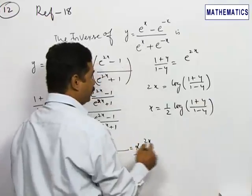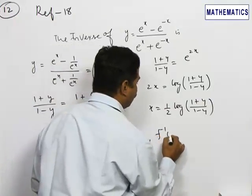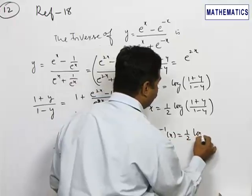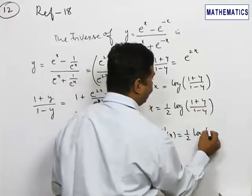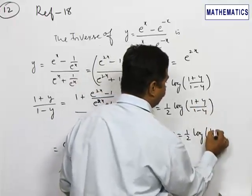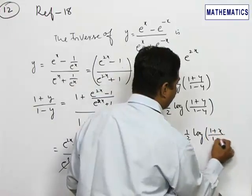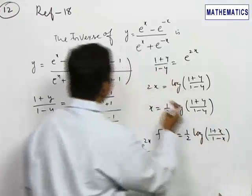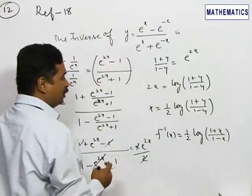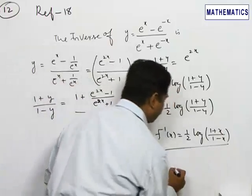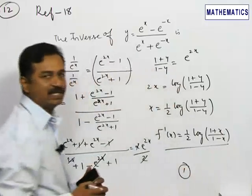We need to express x as a function of y. After this transformation, you can find that f inverse of x is 1/2 log of (1+x)/(1-x). Replace all y with x: 1 plus x by 1 minus x. This is the inverse of the given function. The correct answer is option 1.